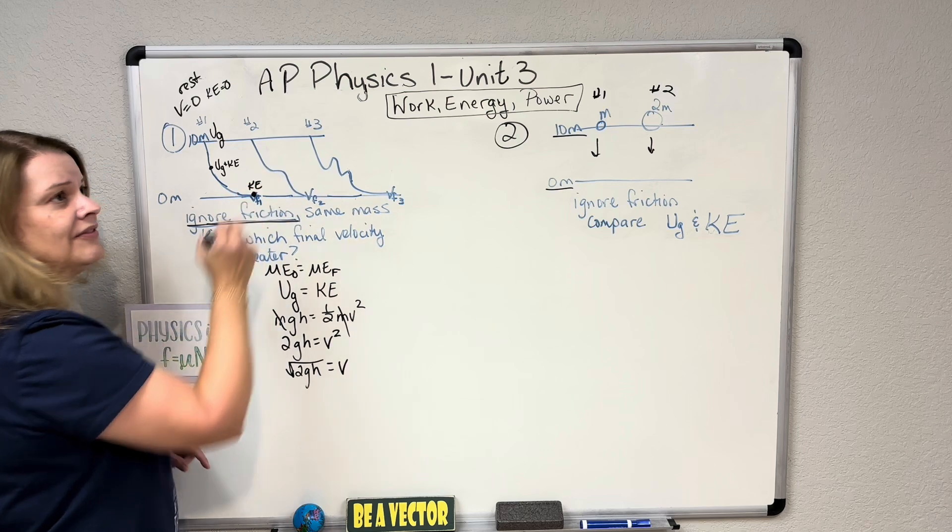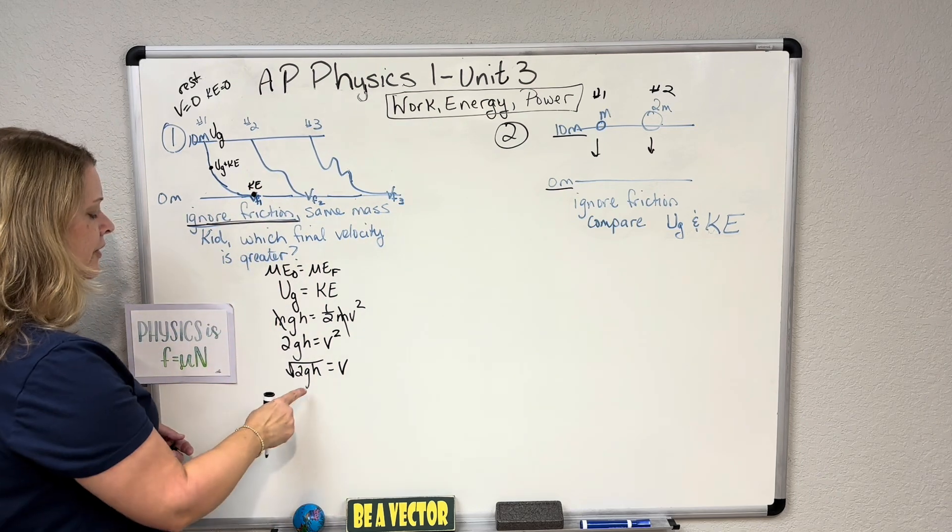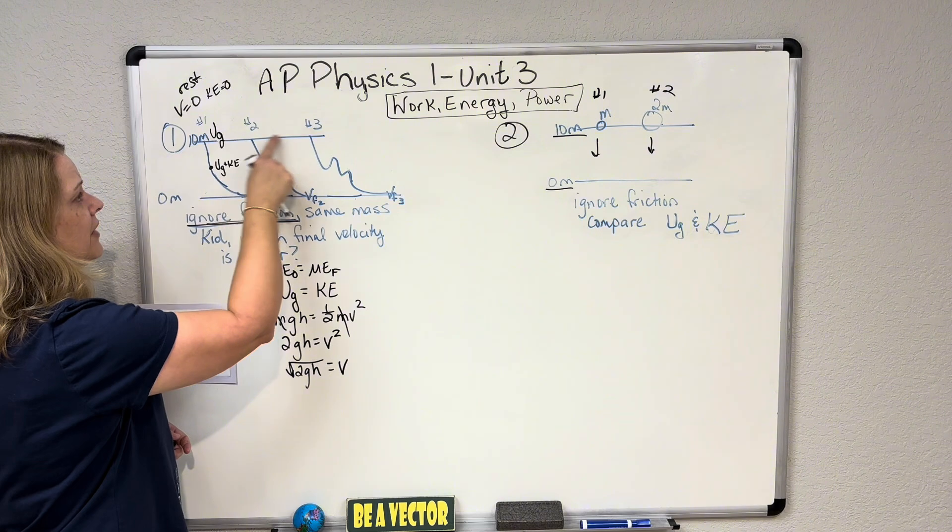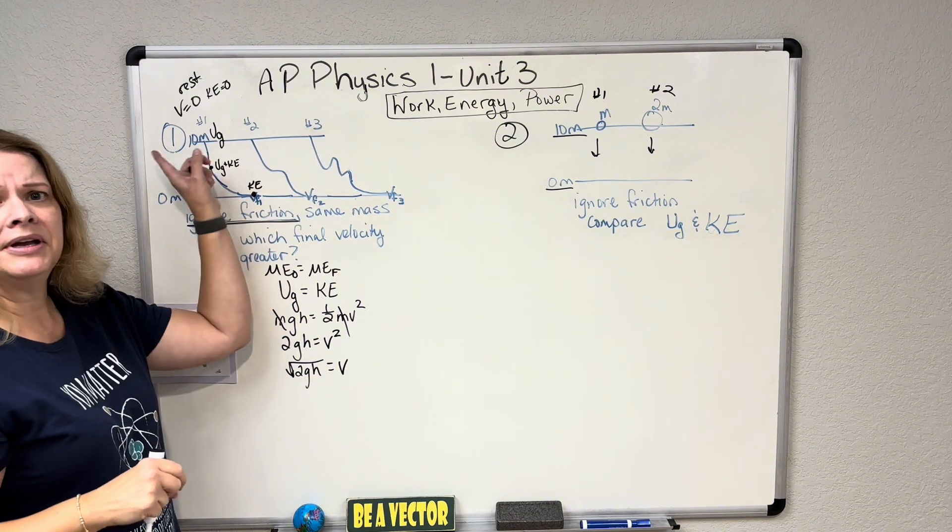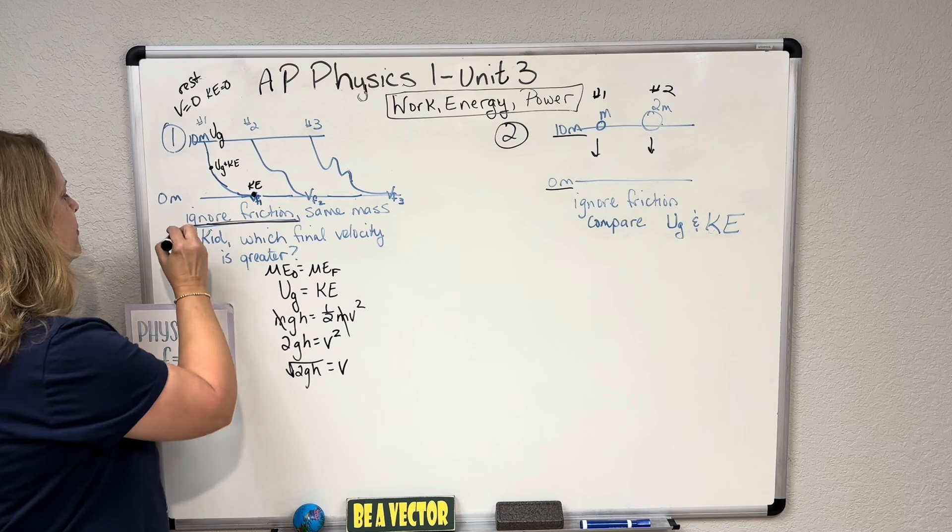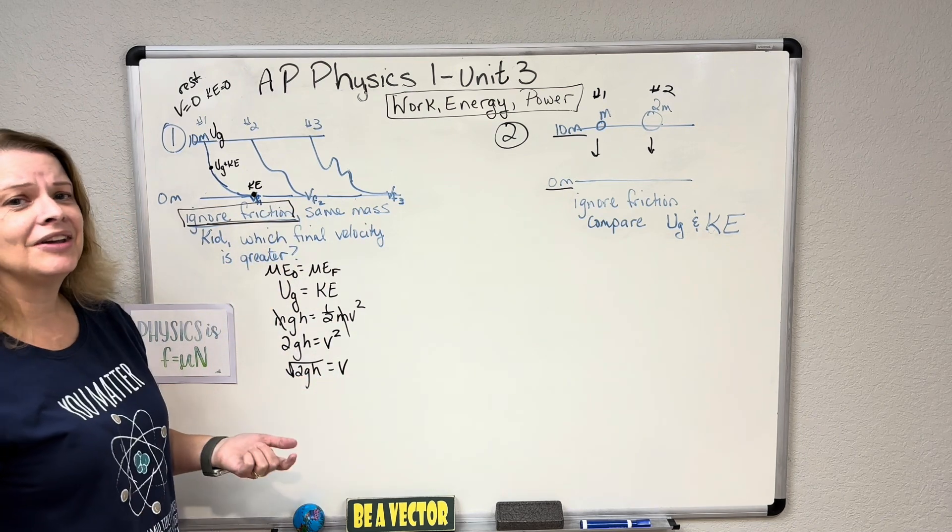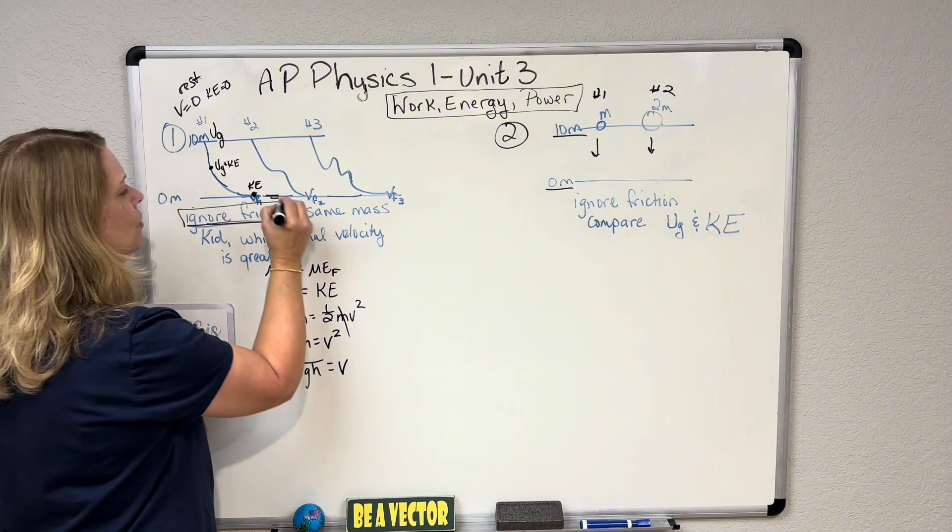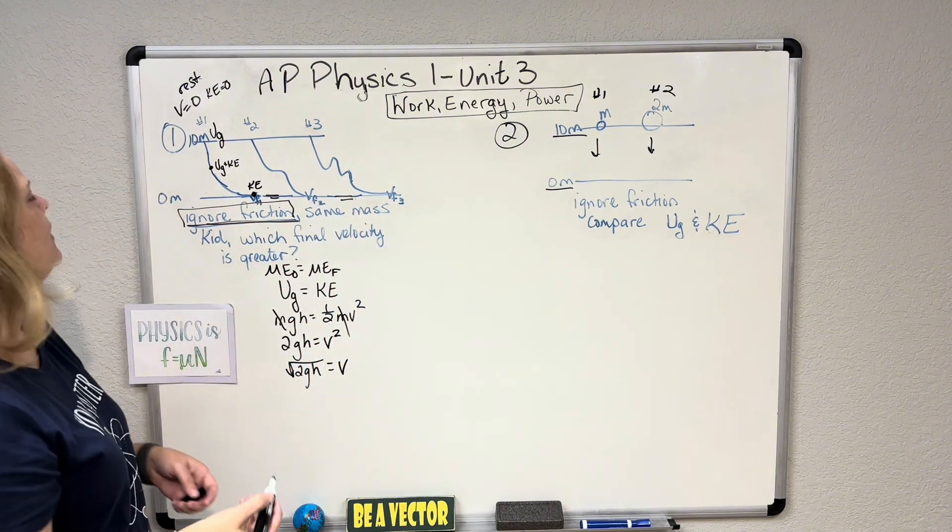Look at this. They all three have the same g, 9.81. Right? That's the scalar quantity of acceleration due to gravity. They all have the exact same height. They're all starting at 10. So as long as they are on the same planet, they start at the same height, you get to ignore friction. Then guess what? They all have the exact same velocity. Velocity 1 equals the final velocity 2, which equals final velocity 3.